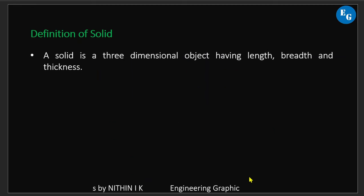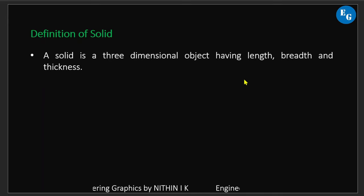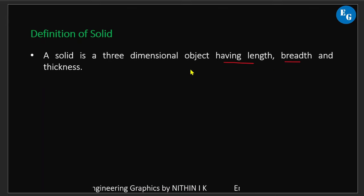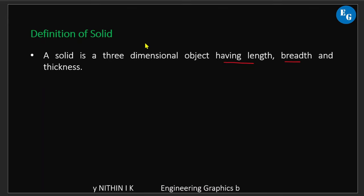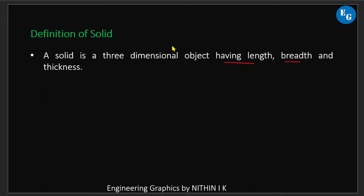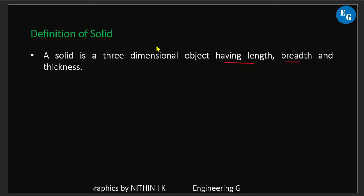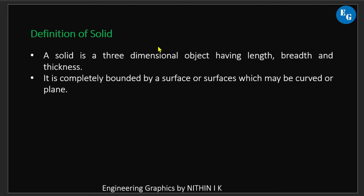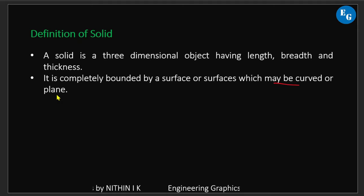Definition of solid: a solid is a three-dimensional object having length, breadth and thickness. A point has no dimension; a line is a one-dimensional object; a plane is a two-dimensional object; a solid is a three-dimensional object. It is completely bounded by a surface or surfaces which may be curved or plane.